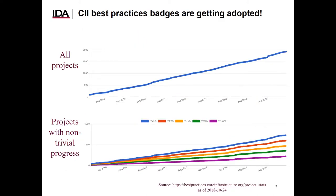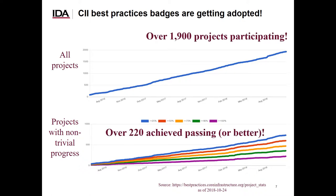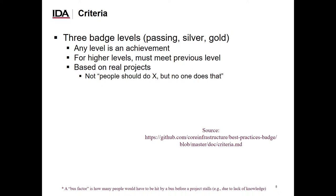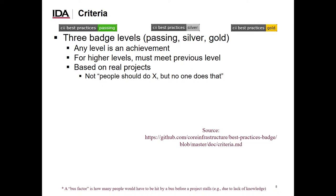As I'm speaking, over 1,900 open source software projects are now participating in the badging process, and over 220 have achieved the passing badge or better. More are being added over time. There are actually three badge levels today: passing, silver, and gold. Any level is an achievement, and the higher level badges require getting the lower level badges.